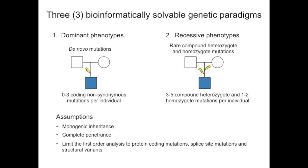The next most tractable paradigm is recessive phenotypes — compound heterozygote or homozygote. Homozygous mutations come particularly from Falzon's families in the Middle East, where there's a high incidence of consanguinity — about 60% — making it possible to perform homozygosity mapping. So you not only sequence these individuals but know in advance where candidate regions are likely to reside, yielding a high solution rate.